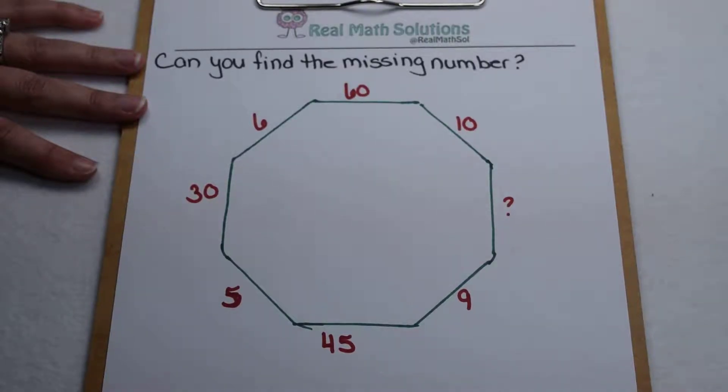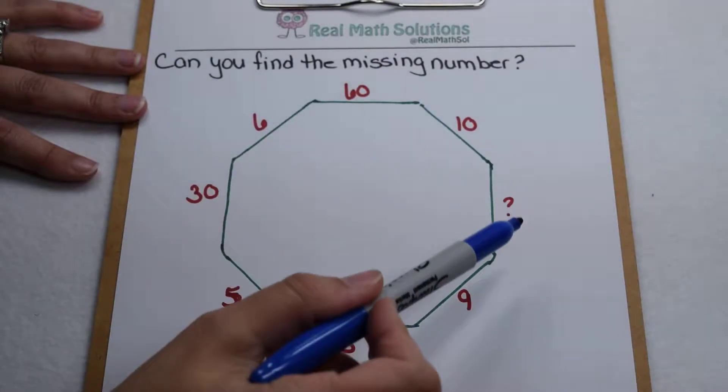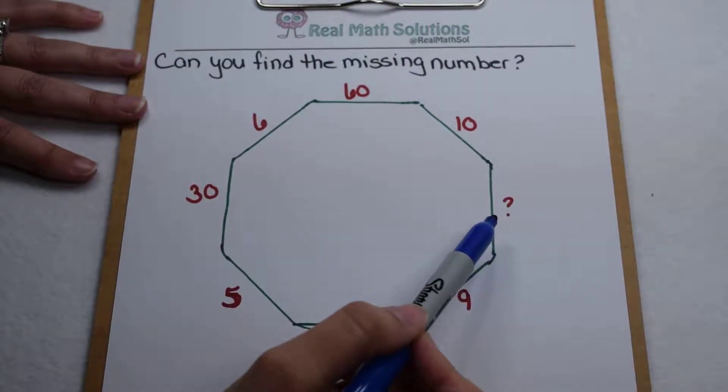This is another great problem that we picked up off of Danica McKellar's Twitter feed, at McKellar Map. When we go around, we need to find a pattern amongst all these numbers so that we can find our missing value.